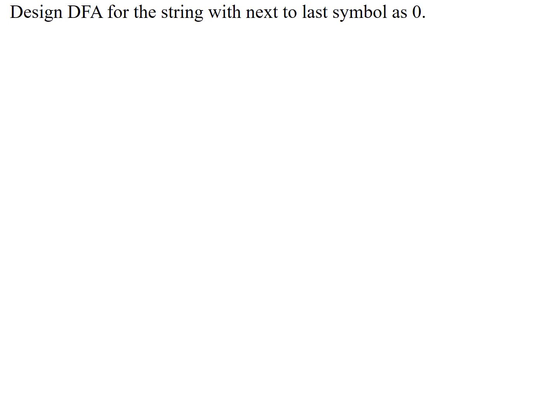Hello, hi everyone. Today in this video I will discuss how to construct a DFA string where the next-to-last symbol is zero. The next-to-last symbol is zero — try to understand what is the condition as given in the problem statement: next-to-last symbol is zero. How to crack this problem?